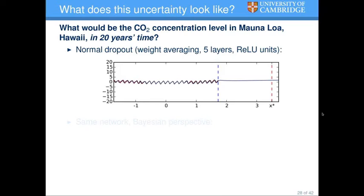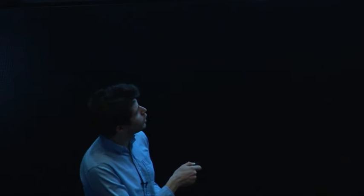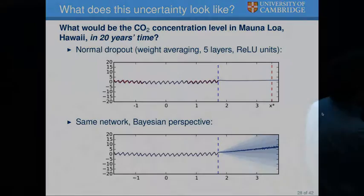What does this uncertainty look like? If you remember the CO2 example from the beginning — I normalized it, fit a model with five layers and rectified linear units using dropout the way we do it today — and asked for the CO2 level in 20 years' time. If you take the same model, same structure, same weights, and just change the testing technique to look at the predictive mean and predictive variance, all of a sudden we see all this information we were throwing away. We see that in 20 years' time the model says it might be this value, but actually I have no idea. For one year's time, the model says it might be that, and I'm more certain about my prediction.